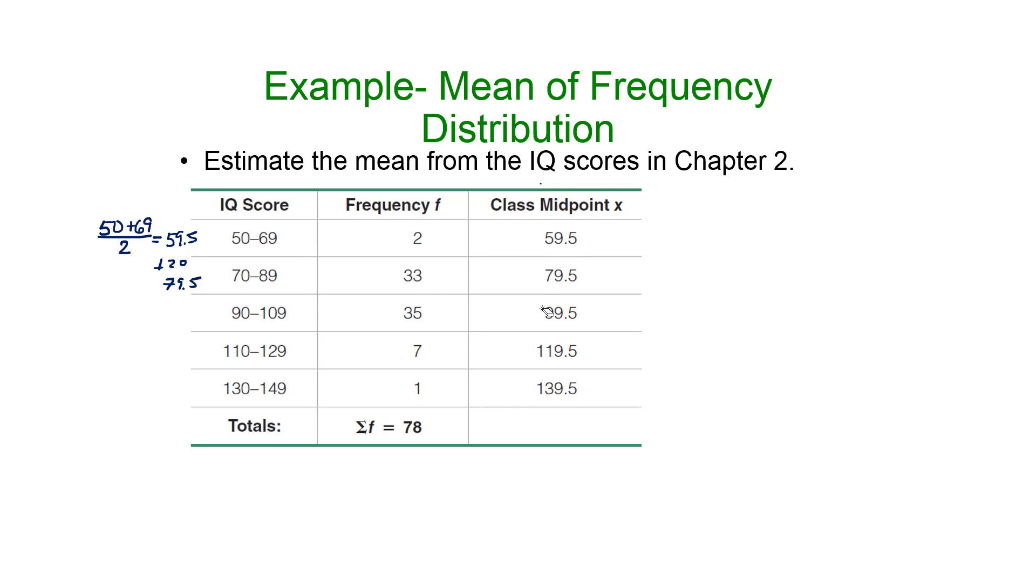But the procedure is exactly the same. Nothing changes. So what are we going to do next? Not add the midpoints. First multiply, because we don't want the sum of the midpoints. Each of these occurs a different number of times, not just once.